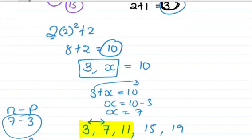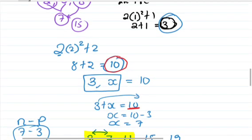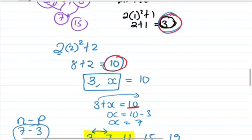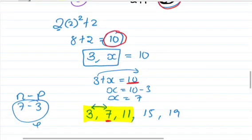If there's a common difference, the second term minus the first term gives 4. The third term would be 7 plus 4, which is 11. Therefore, the first three terms are 3, 7, and 11.